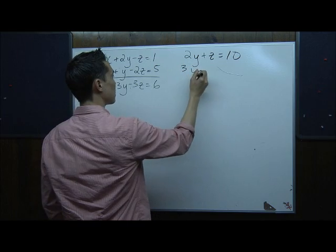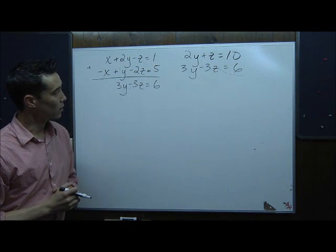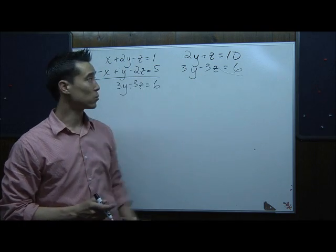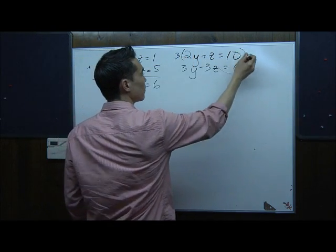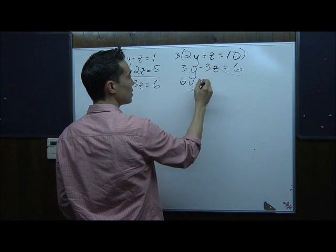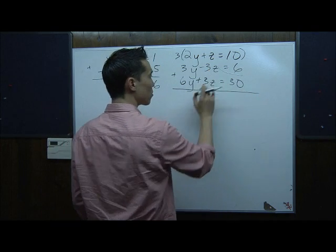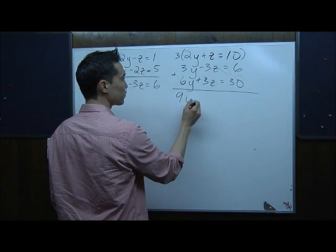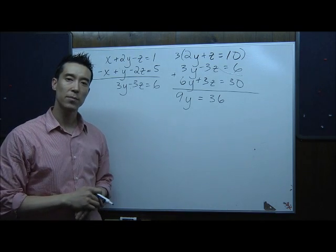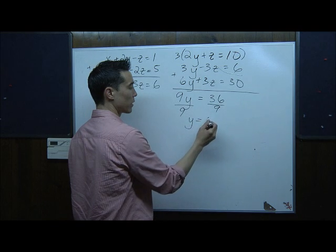I have 3y minus 3z equals 6 paired with 2y plus z equals 10. To eliminate z, I'll multiply the top equation by 3, giving 6y plus 3z equals 30. Now adding: the 3z's drop out, and I have 9y equals 36. Dividing both sides by 9, y equals 4.